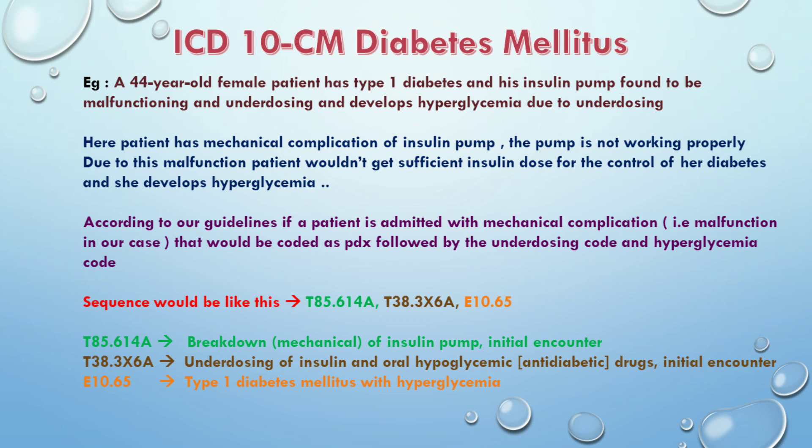T85.614A is breakdown of insulin pump, initial encounter — this is the primary diagnosis. T38.3X6A is underdosing of insulin and oral hypoglycemic drugs, initial encounter — this is the secondary diagnosis. After that, the patient has hyperglycemia with type 1 diabetes, and E10.65 is mentioned.